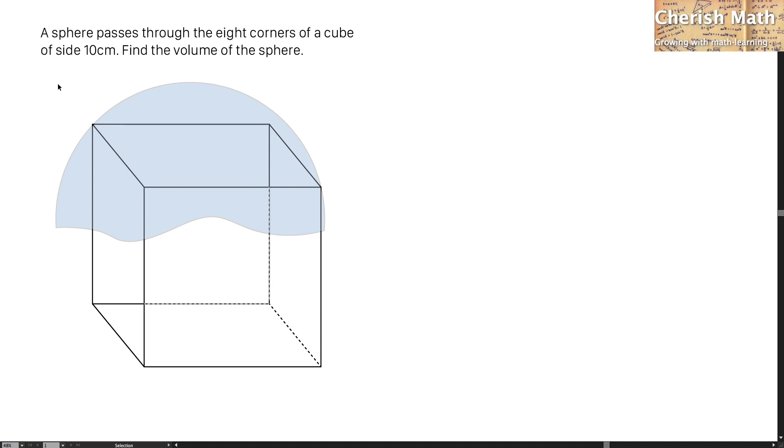Hi from Cherish Math. This is the question for today. A sphere passes through the eight corners of a cube of side 10 cm. Find the volume of this sphere.